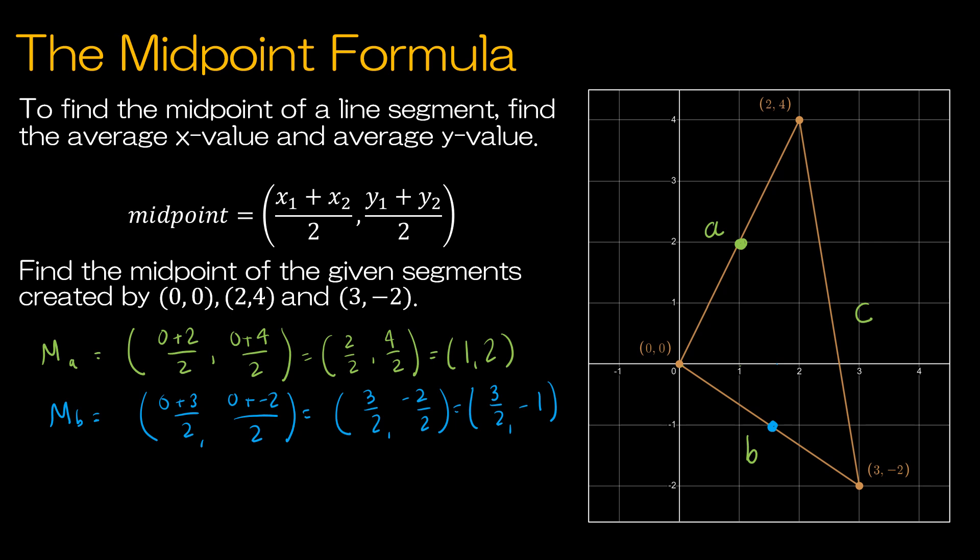Let's do the last for c. So for c, I'm going to take the x's, 2 plus 3. Again, I'm just finding those from my picture. (2 + 3) / 2 and (4 + (-2)) / 2. 2 plus 3 is 5/2. 4 plus -2 is 2/2. That gives me 5/2, 1. And so 5/2 is the same as 2 and a half, and then 1. That would be the midpoint of segment c.